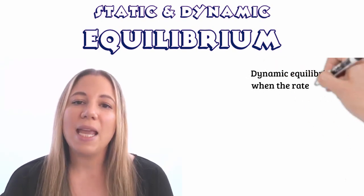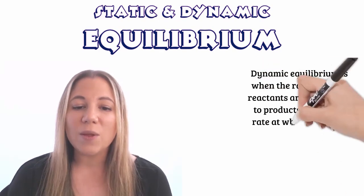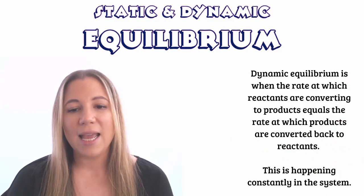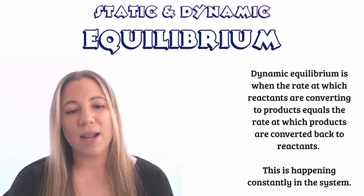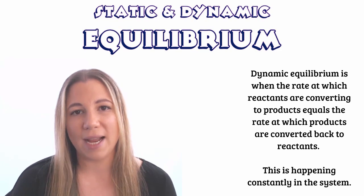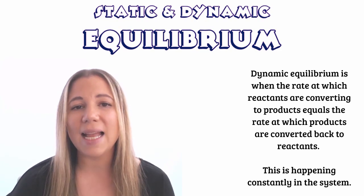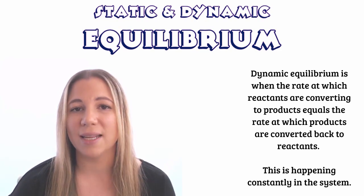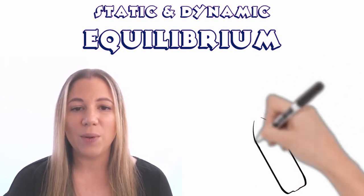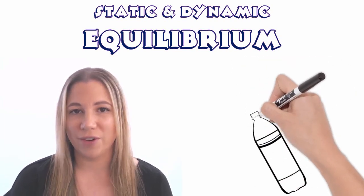A dynamic equilibrium is when the rate at which reactants are converting to products equals the rate at which products are converted back into the reactants, and this is happening constantly in the system. An example of a dynamic equilibrium is a sealed bottle of soft drink.